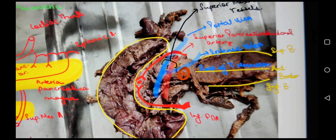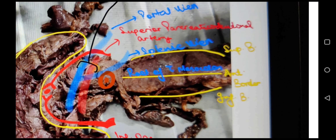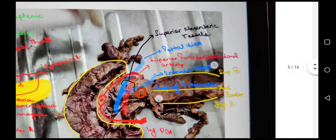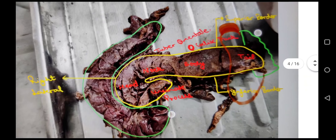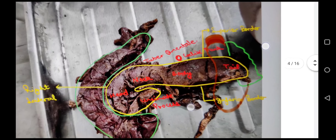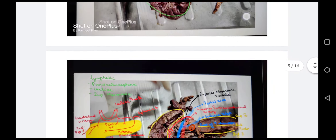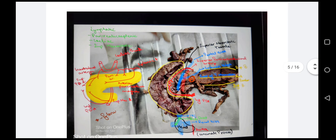The splenic vein and superior mesenteric vein join to form the portal vein. The body has three borders: anterior border, superior border, and inferior border. The anterior border is related to the root of the transverse mesocolon. The superior border is related to the celiac trunk. The tail is posteriorly related to the left kidney and spleen.